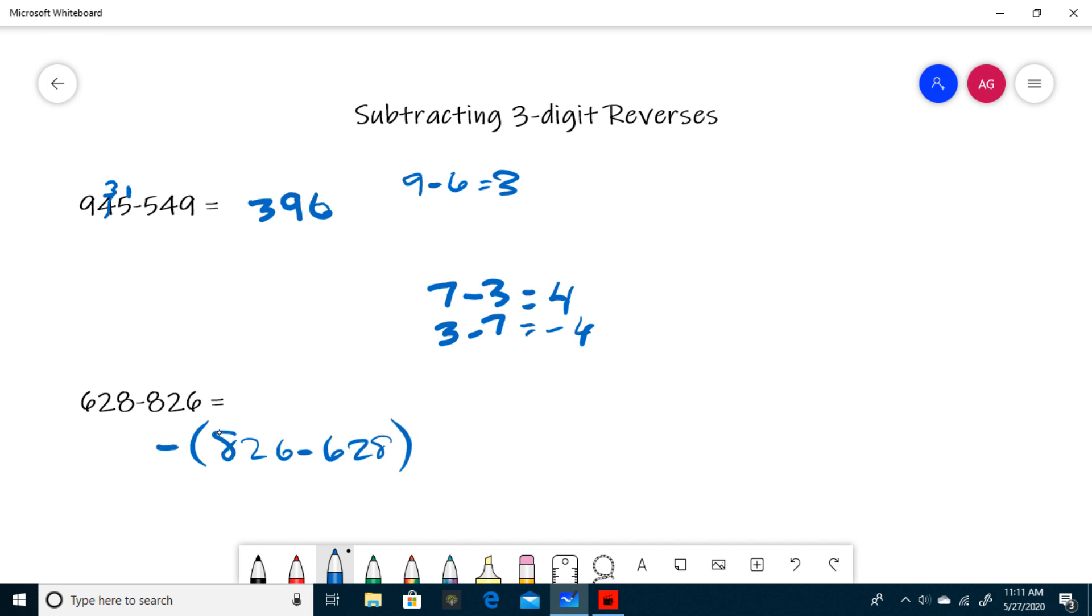So what is 826 minus 628? First, you have to realize I can't do 6 minus 8 because 6 is less than 8, so I have to borrow from here. So that's a 1, and now I have 16 minus 8. 16 minus 8 is 8.